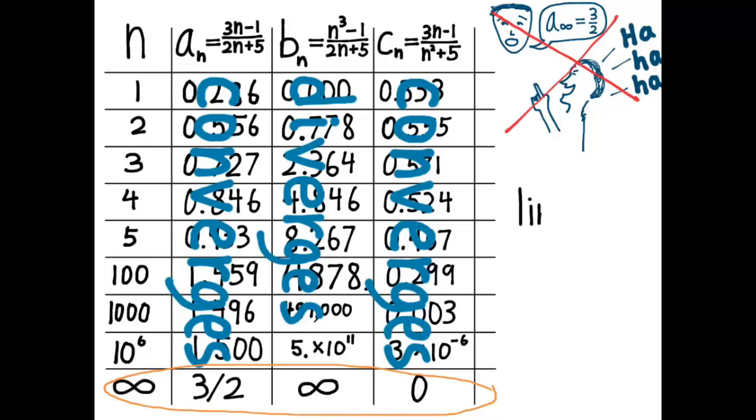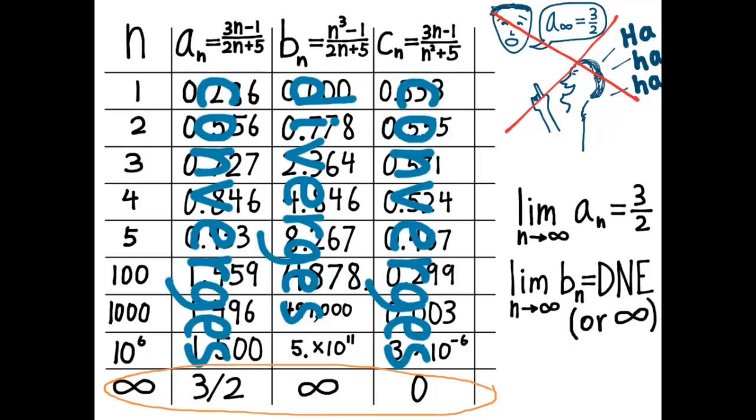Instead, you should use the correct mathematical notation. The limit as N approaches infinity of A sub N equals three halves. The limit as N approaches infinity of B sub N does not exist. I know that's a little awkward grammatically, but that's the way people say it. You could also say the limit of B_N is equal to infinity. That means the same thing, but it's more specific. And you could say the limit as N approaches infinity of C_N equals zero.